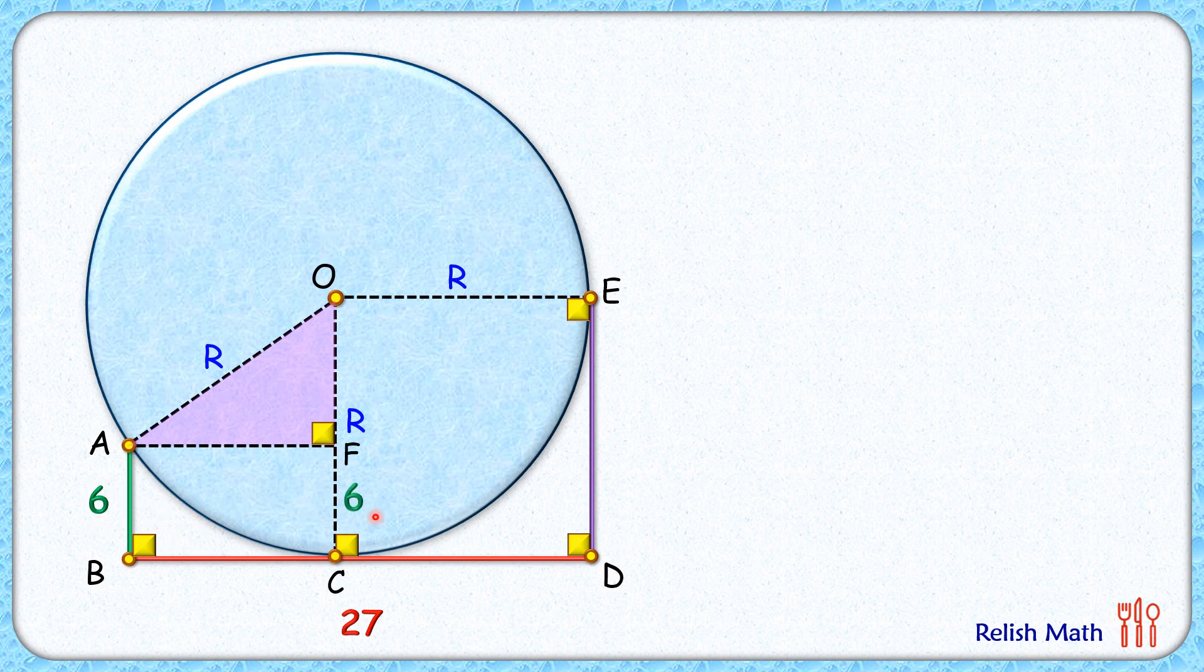Now for the base length, if you see OEDC, a square is getting formed here. So OE length is R centimeters, thus CD length will be the same as R centimeters. As CD is R and full length BD is 27, BC length will be 27 minus R.